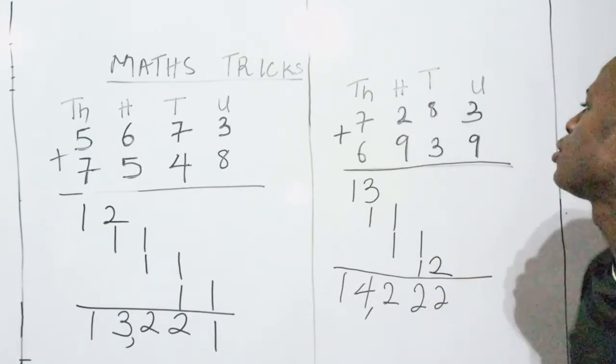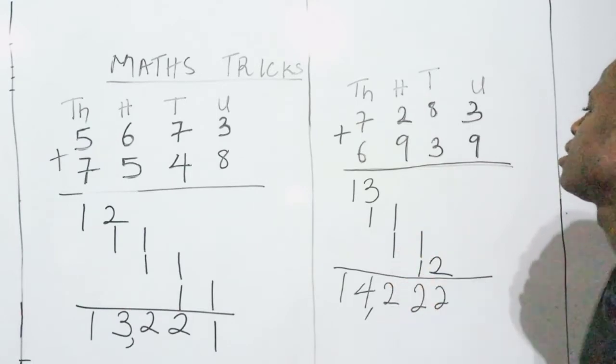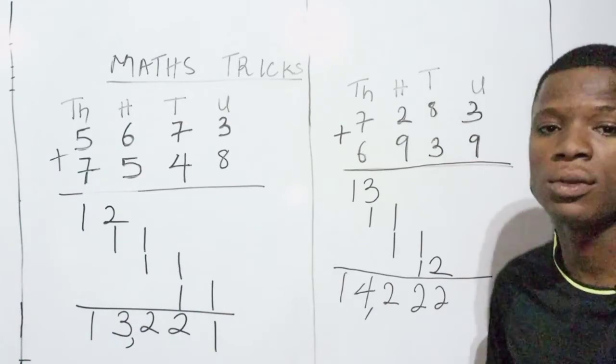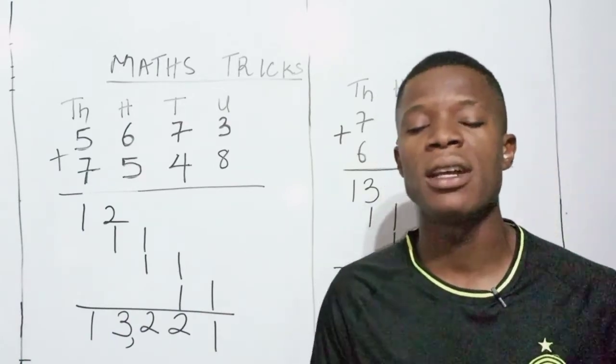So at the end, you can see that 7,283 plus 6,939 is equal to 14,222. Thank you and have a wonderful day ahead.